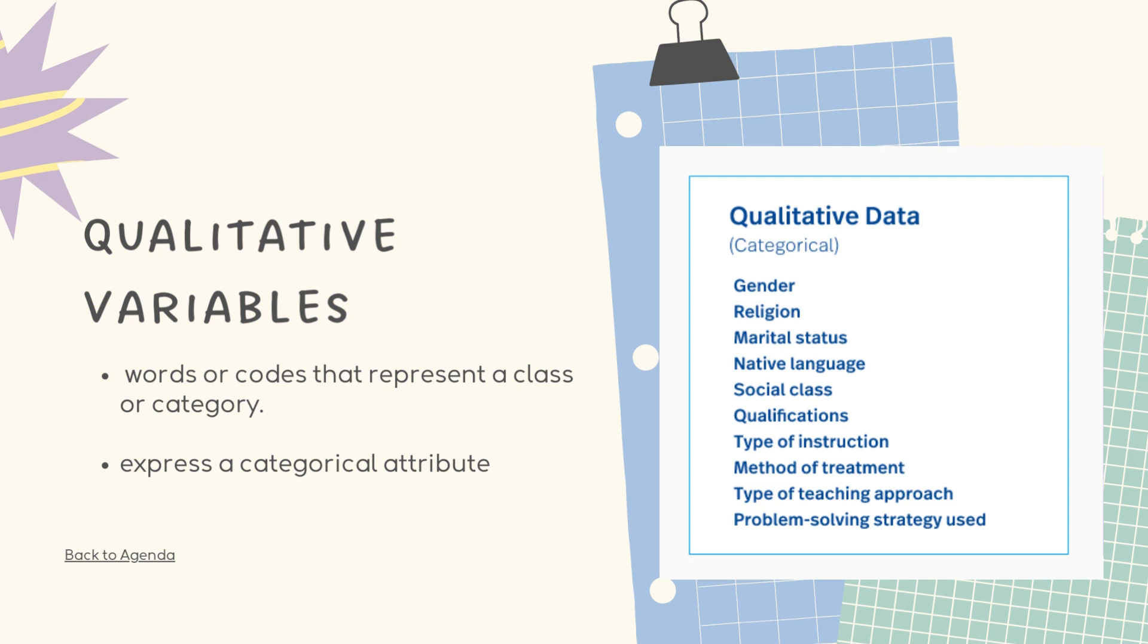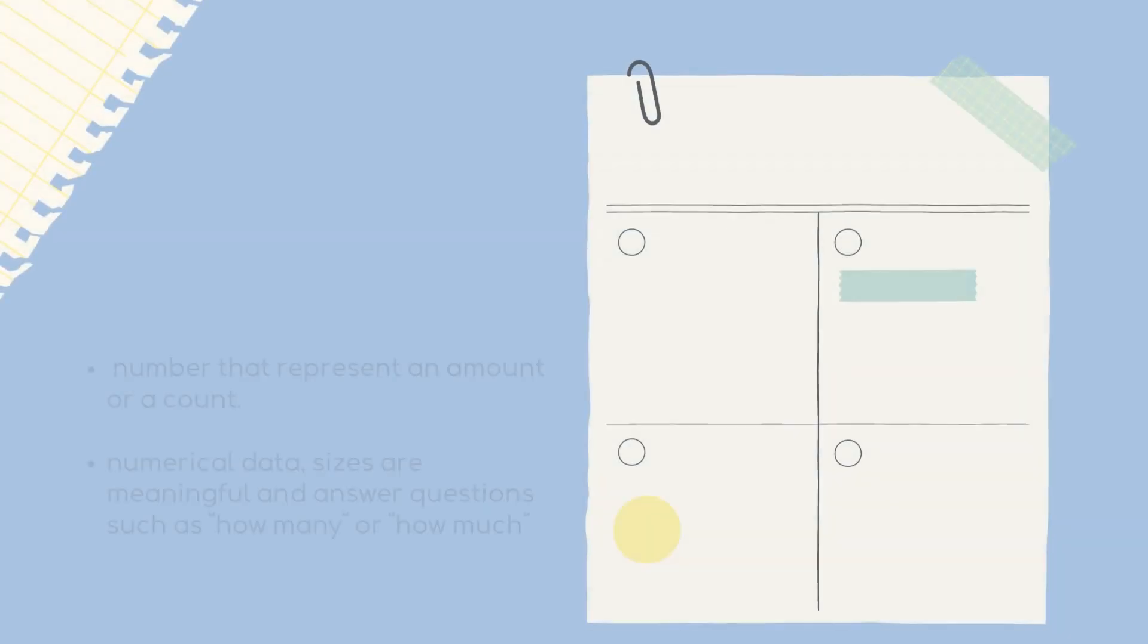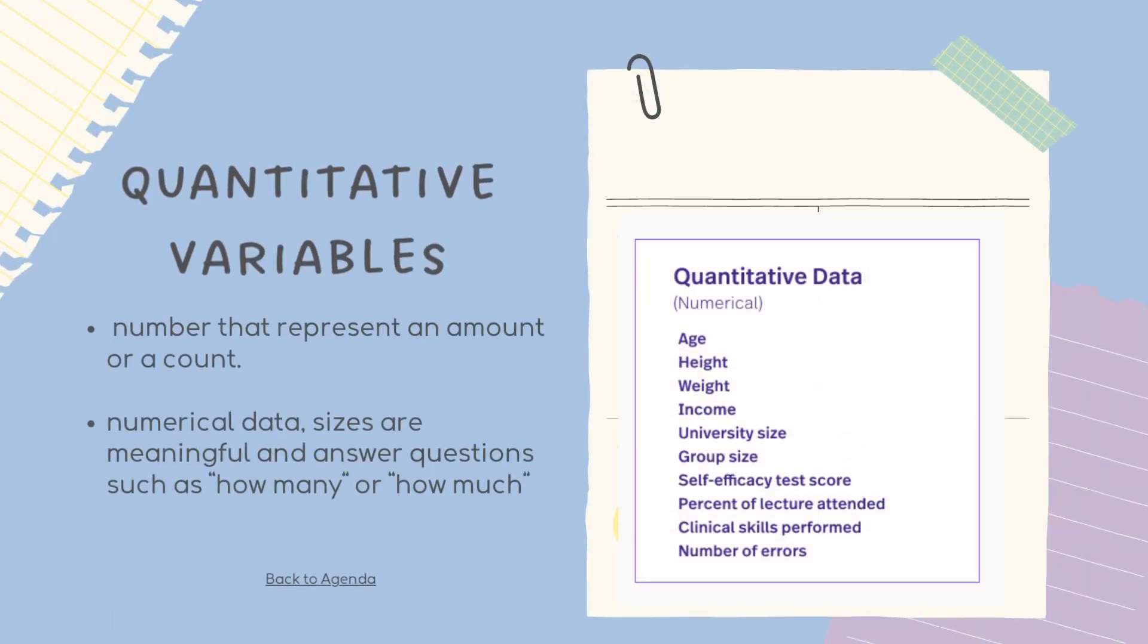Moving on to the quantitative variable. Number that represents an amount or a count, numerical data, sizes are meaningful and answer questions such as how many or how much. Examples are age, height, weight, income, university size, group size, etc. These are samples of quantitative variables.